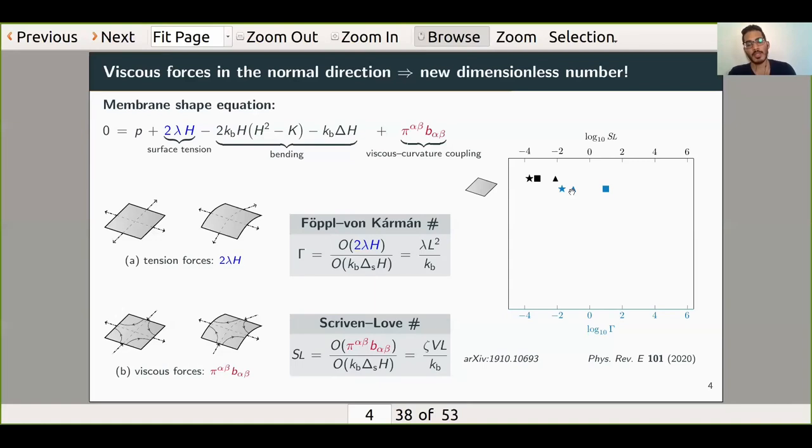From planar systems, all the experiments we considered, these viscous forces were negligible. But the story is very different when I considered spherical geometry. In particular, here we see several experiments where both the tension forces and the viscous forces are much bigger than the bending forces. So the membrane is behaving more like a fluid film than an elastic shell. That's very different from how people generally think of membranes and how people have modeled them in the past. The story is similar for cylindrical systems, where again we see biologically relevant situations where both of these dimensionless numbers are greater than one.